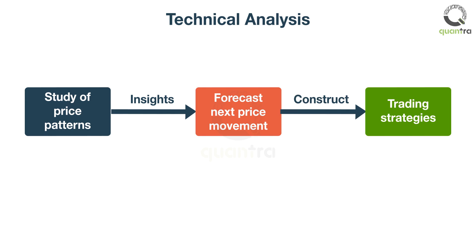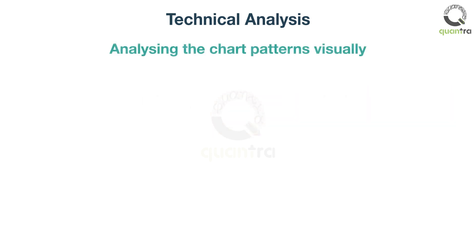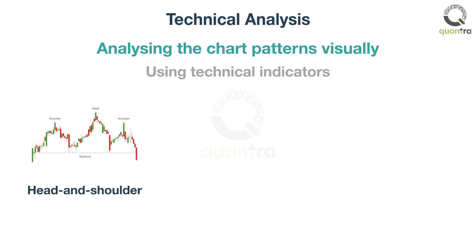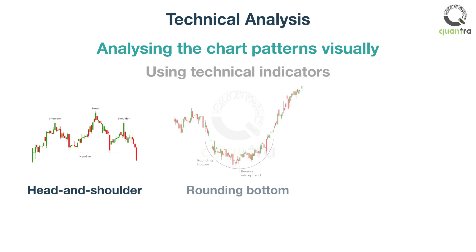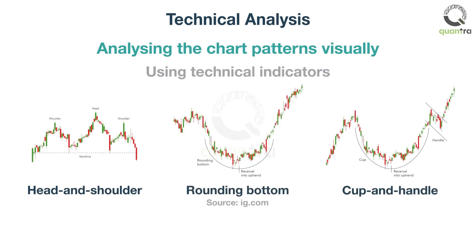Technical analysis can be done in two ways. One way is by analyzing the chart patterns visually. The other way is by using technical indicators. Chart patterns like the head and shoulder, rounding bottom, and cup and handle are very popular with traders who follow chart-based technical analysis.